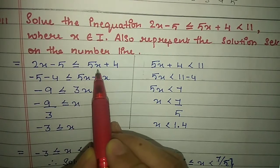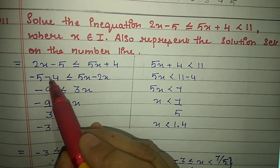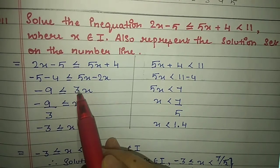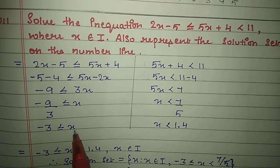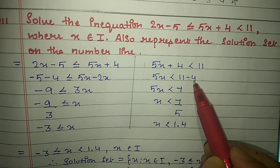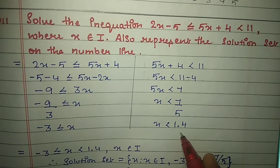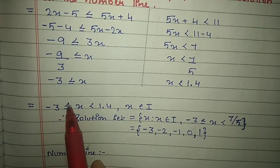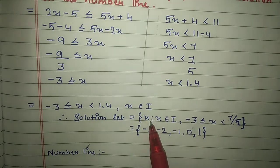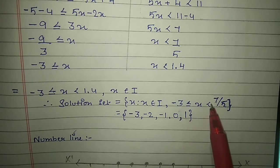Take the first half: 2x minus 5 ≤ 5x + 4. Shift 2x to the right as minus 2x and 4 to the left as minus 4. You get minus 9 ≤ 3x. Shift 3 across: minus 3 ≤ x. For the remaining half: 5x + 4 < 11. Shift 4 across: 5x < 7, so x < 7/5 = 1.4. Joining both: minus 3 ≤ x < 1.4, x belongs to integers. Write your solution set: {x : x ∈ I, minus 3 ≤ x < 7/5}.